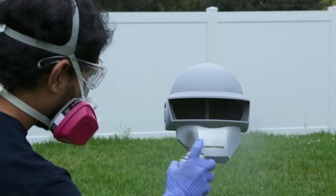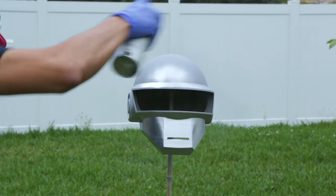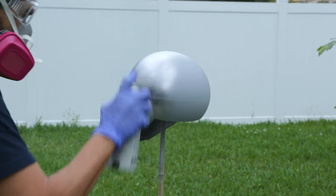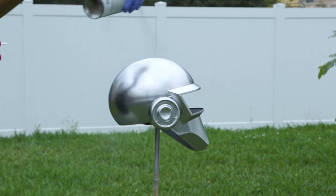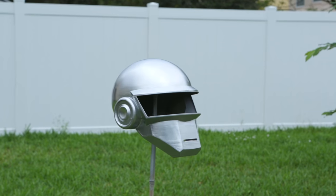Now once the primer has dried we can apply two coats of chrome spray paint. This is going to make it look really metallic. We'll give the chrome about a day to fully dry.